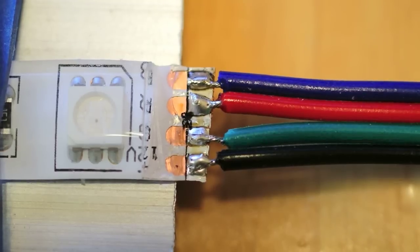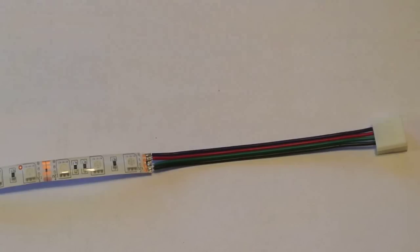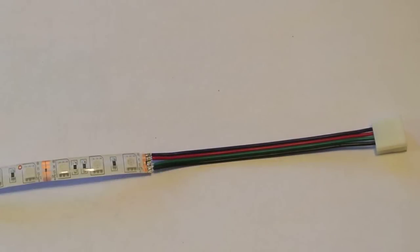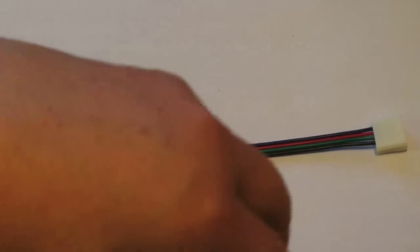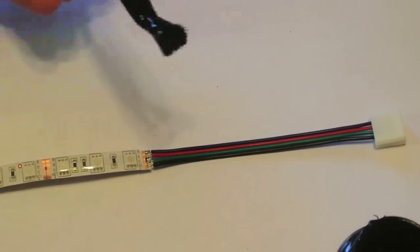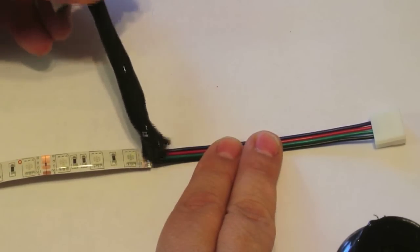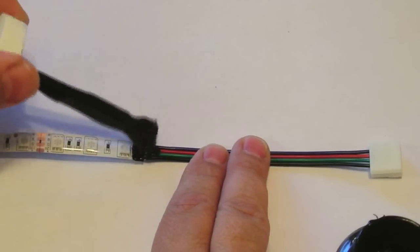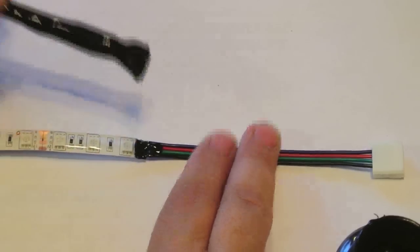And that's basically how you solder a new one to another strip. And then what I like to do is use this stuff called liquid tape. And it's kind of gooey. But then run this liquid tape over the wires.